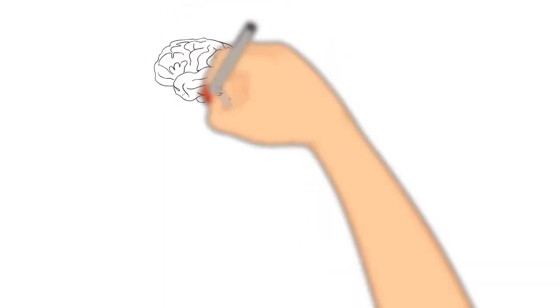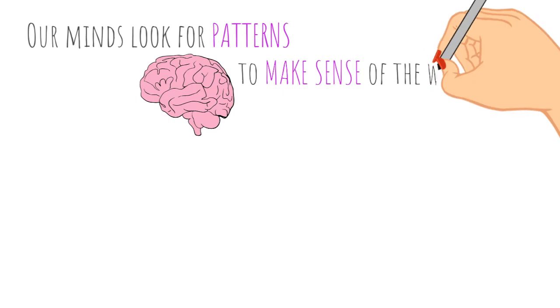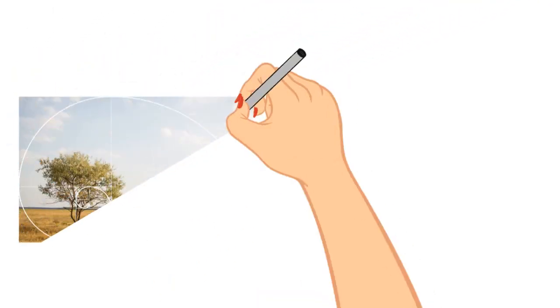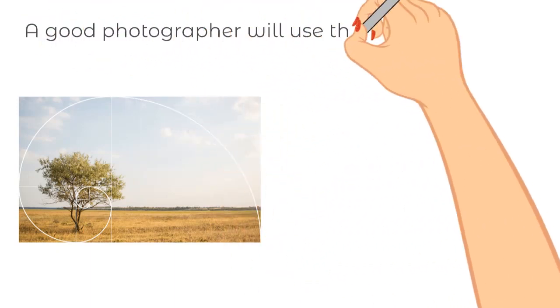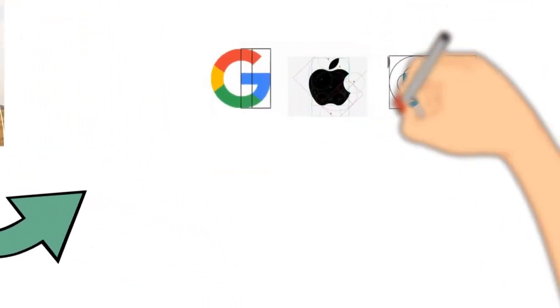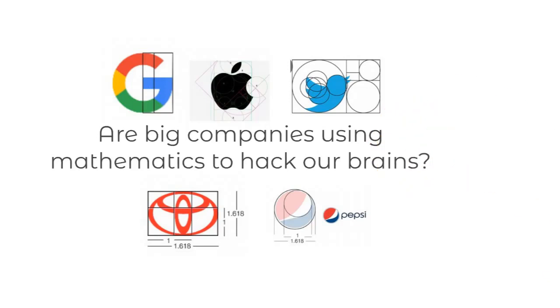Humans are amazing things. And our minds look for patterns to make sense of the world. So we naturally see the beauty in things that are split in the golden ratio. A good photographer will use the golden ratio when framing a photograph. And look at these logos. Are big companies using mathematics to hack our brains?